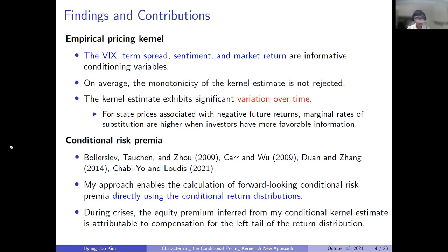My paper can also be related to the literature on conditional risk premia. My estimation approach enables me to calculate forward-looking conditional risk premia directly using the conditional return distributions. I find that during economically bad times, the equity premium inferred from my conditional pricing kernel estimate is entirely attributable to compensation for the left tail of the return distribution.